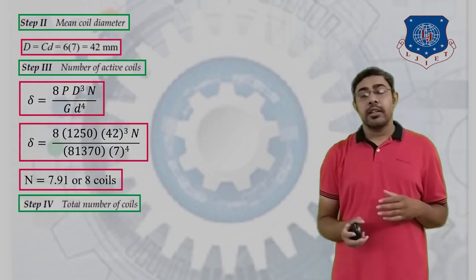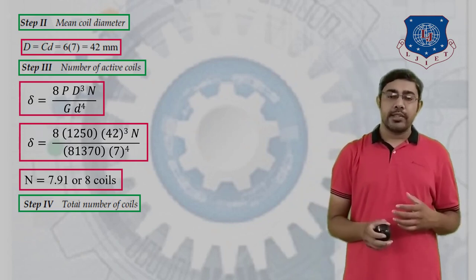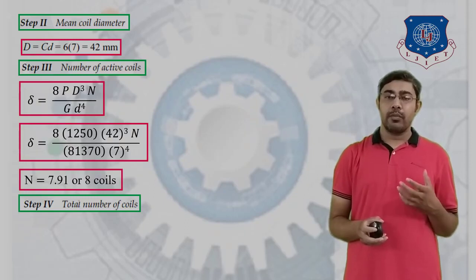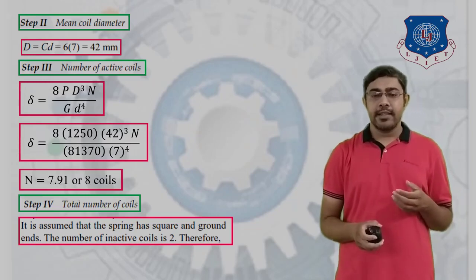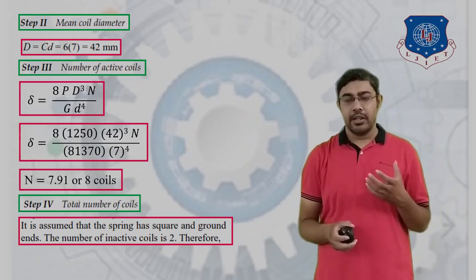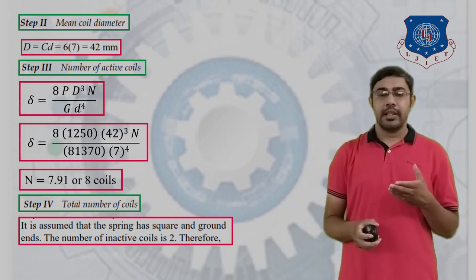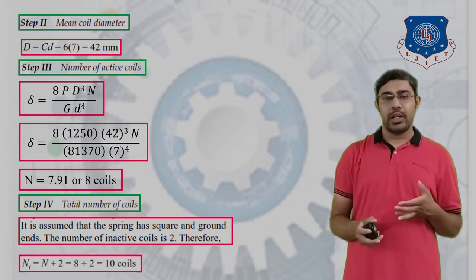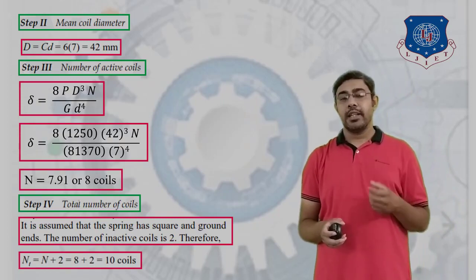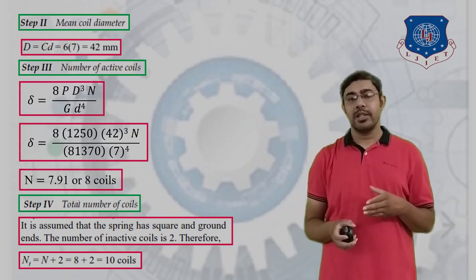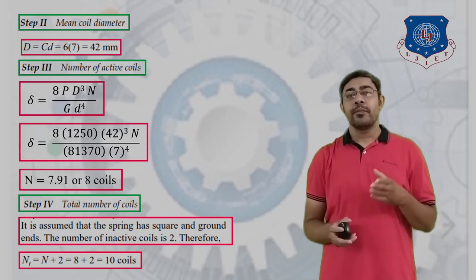Step 4: Calculate the total number of coils. Assuming the spring has square and ground ends, 2 inactive coils are added. Therefore, total number of coils N_t = N + 2 = 8 + 2 = 10 coils.